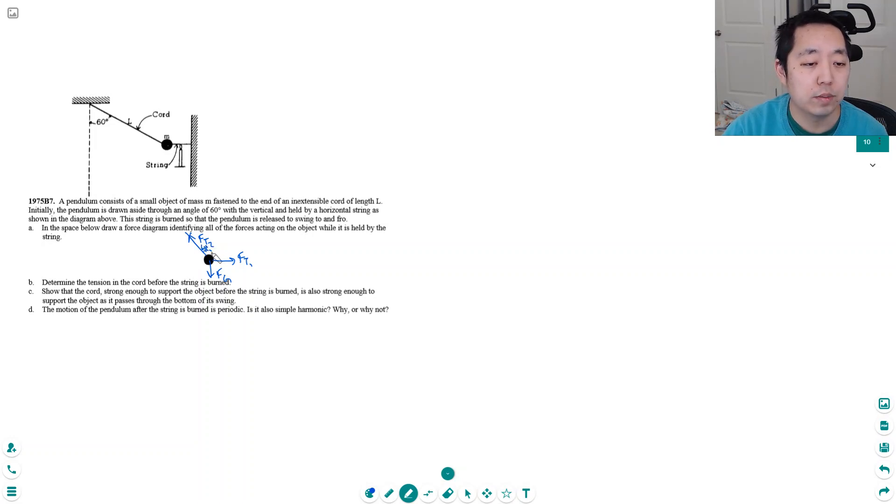Determine the tension in the chord before the string is burned. We're doing some net forces in the x and y direction. In the x direction, I have FT1, this force to the right, has to equal this component of the force to the left, which is FT2 sine 60 degrees. Sine of 60 degrees is root 3 over 2.